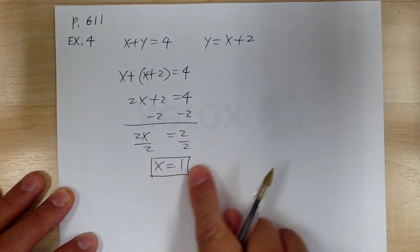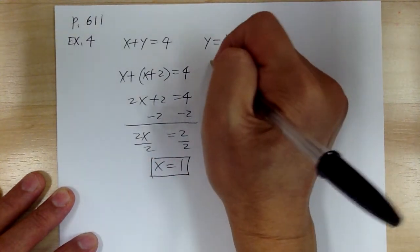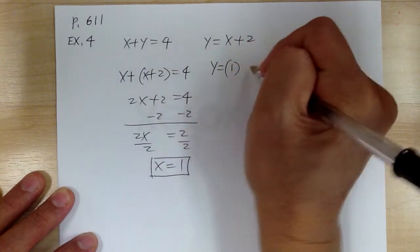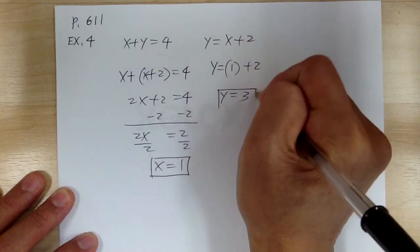Once you solve for one variable, now you substitute back in. So you got y equal to 1 plus 2, so y equals 3. And that's it.